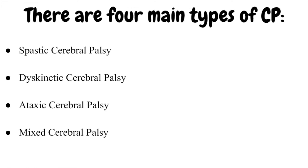Ataxic cerebral palsy. People with ataxic CP have problems with balance and coordination. They might be unsteady when they walk, have a hard time with quick movements or movements requiring a lot of control, and have difficulty controlling their hands or arms when reaching for something. Mixed cerebral palsy — some people have symptoms of more than one type of CP. The most common type of mixed CP is spastic-dyskinetic CP.